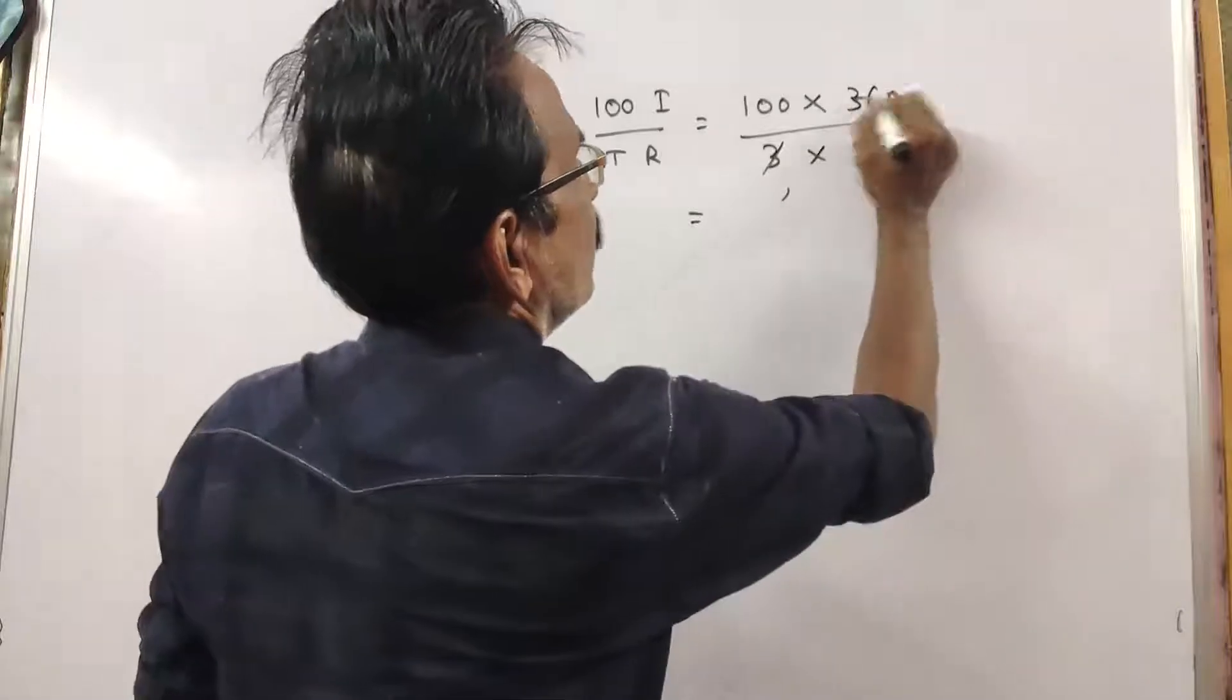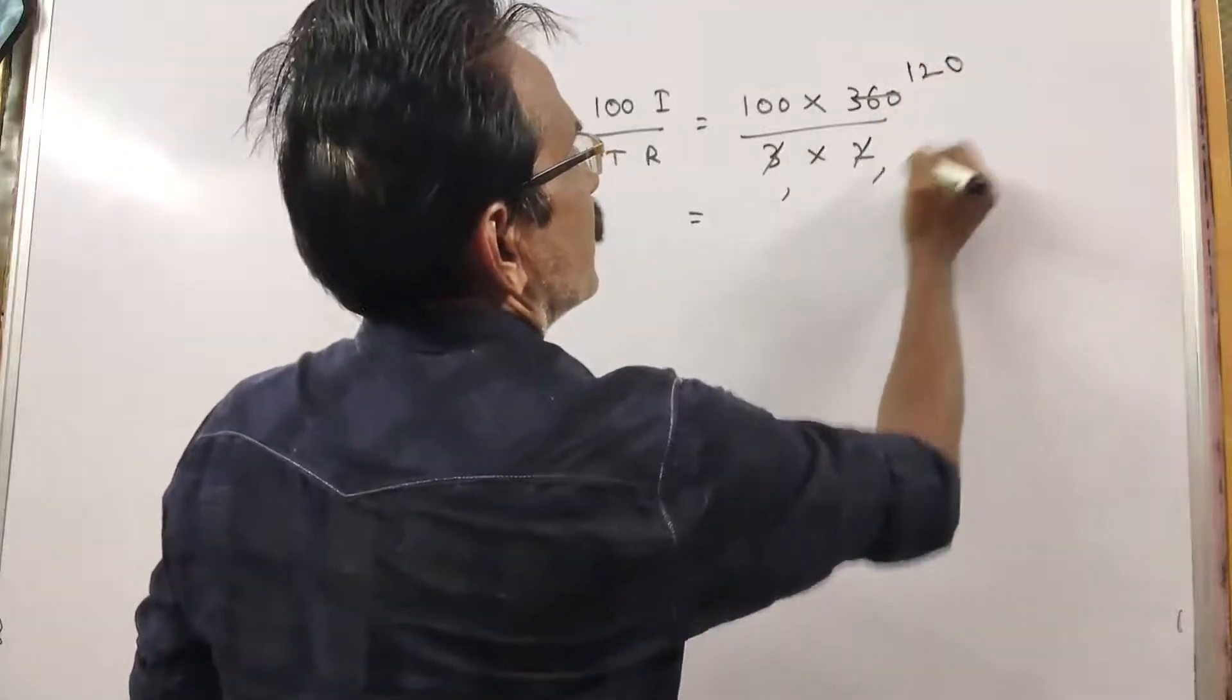On cancellation you get 3 into 120, 2 into 60.